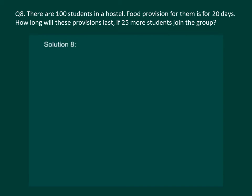So, first thing that we notice is that more the number of students then sooner will the provision finish off. Therefore, this is a case of inverse proportion.